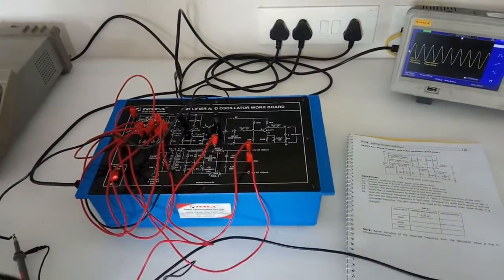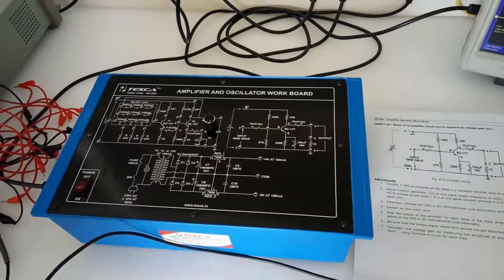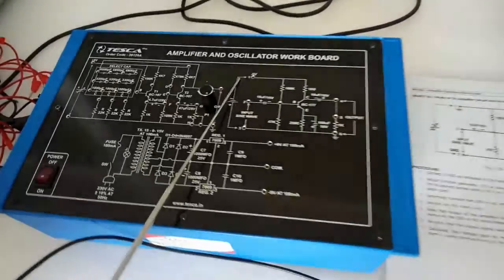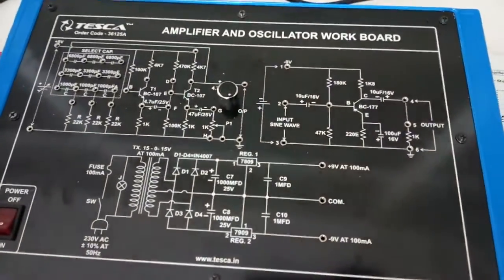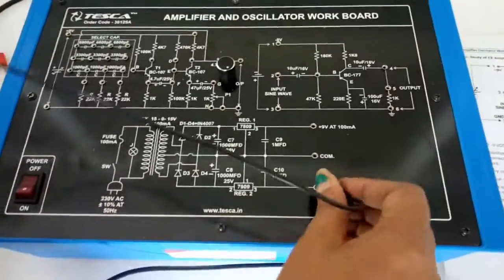The second experiment is to study the CE amplifier circuit and to measure its voltage gain and frequency gain. Here we will use this part of the circuit. First, we will give the power supply: minus 9 volts here and ground here.